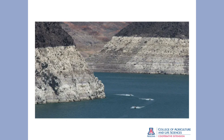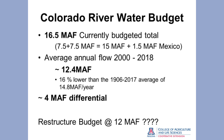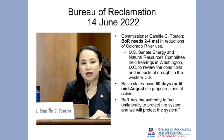Just like spending more than you bring in burns through savings, we've been drawing down our water reserves at Lake Mead and Lake Powell, which are now both around 25 percent capacity. In June, Bureau of Reclamation Commissioner Camille Touton, when questioned at a Senate hearing, told basin states they had 60 days to come up with a plan to manage the river within realistic constraints — or the Bureau had authority to act unilaterally to protect the system.